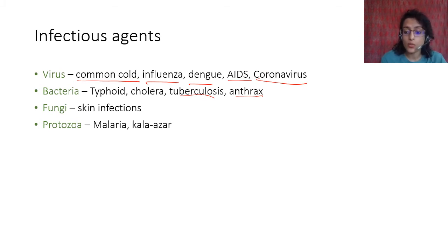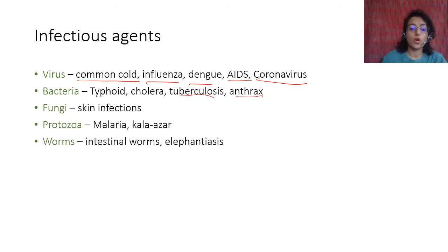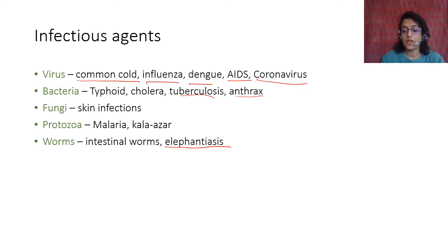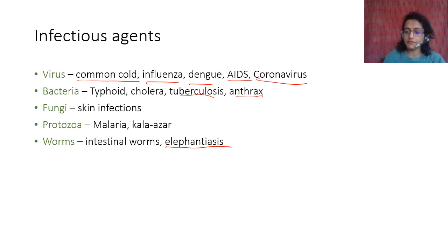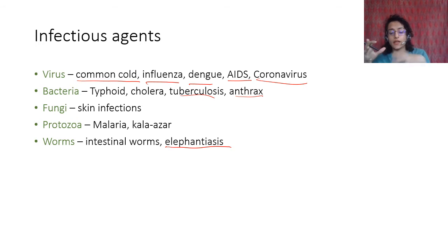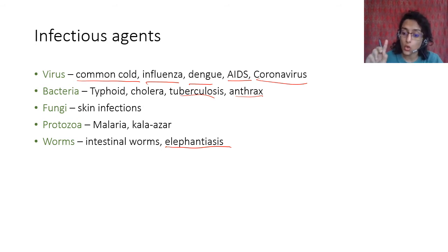Then you have worms such as intestinal worms or elephantiasis. Elephantiasis is caused by a filarial worm — it is a disease where the lymph glands become swollen and the foot looks very large. That is why it is called elephantiasis. It is a chronic disease, as we spoke about in the previous video.